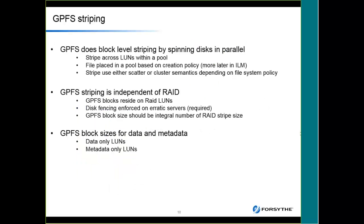If you define a file system across three or four NSDs, GPFS will do block-level striping across the LUNs within that pool. Depending on your file system policies, it uses different methods for striping. It is independent of RAID — you attach SAN disk which may already be RAID 1, 5, or 6 behind the scenes, and GPFS then stripes that file system across the NSDs you specify. There are also best practice recommendations on block sizes from IBM documentation.